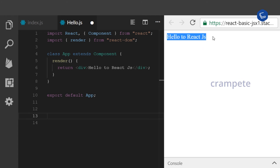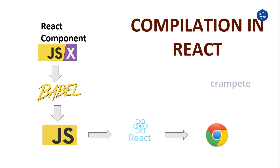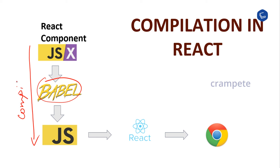Let's take a look at how compilation happens in React. The application programmer writes JSX as part of a React component. At build time, JSX is compiled into plain JavaScript code. Babel is a JavaScript compiler that includes the ability to compile JSX into regular JavaScript. React uses JSX for templating instead of regular JavaScript, and it is faster because it performs optimization while compiling. This transformation of a React component via Babel into plain JavaScript happens during compilation time.